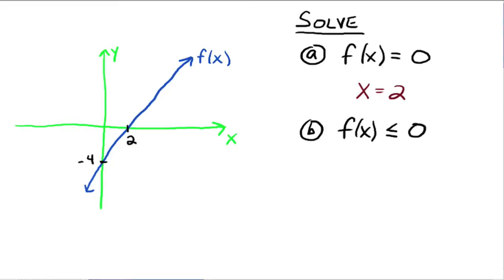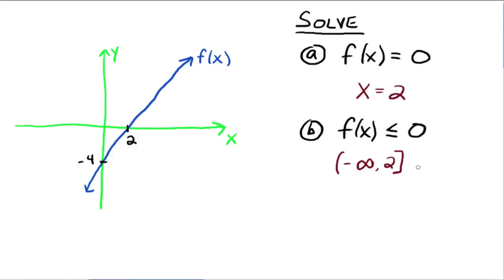What about f(x) ≤ 0? This asks us to find all x values where the function values are less than or equal to 0. If the y values are less than 0, they're negative, which means the graph of f has to be below the x-axis. From negative infinity until we get to 2, our graph is below the x-axis. Since we include equal to 0, the point x = 2 is included. In interval notation, that's (-∞, 2].